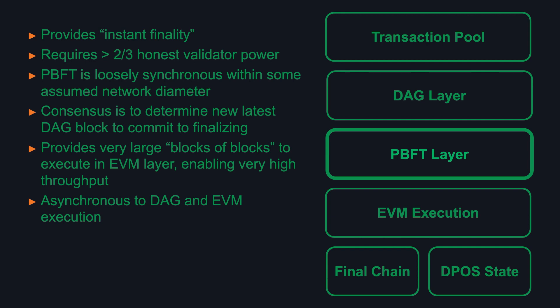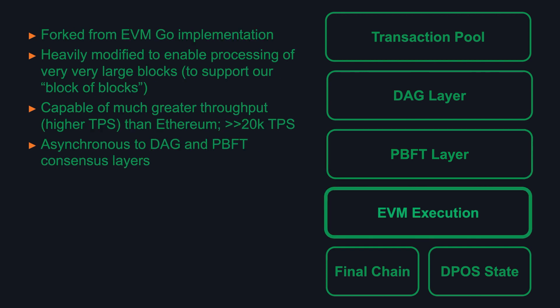PBFT is also asynchronous to the DAG and EVM, meaning that to achieve consensus within PBFT, not everyone has to have the same DAG at any given instant, nor do you have to wait for the last committed block to be executed in EVM before going on to produce the next PBFT block. The EVM layer is forked from Ethereum's Go implementation but has been heavily modified to enable processing of these very large blocks of blocks, which is what enables us to achieve very high throughput — much greater than 20,000 TPS, much greater than Ethereum. It's asynchronous to the DAG and PBFT layers; having put a block in the queue for EVM execution, PBFT and DAG can continue without waiting.